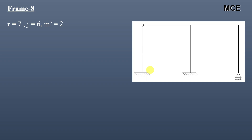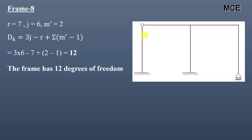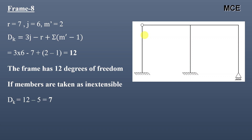For frame 8, this frame has 7 reactions, 6 joints, and 1 internal hinge. The number of members meeting at this internal hinge is 2, so m′ = 2. The value of DK is equal to 12, meaning this frame has 12 degrees of freedom. If members are taken as inextensible, this frame has 5 members, so DK = 12 − 5 = 7.